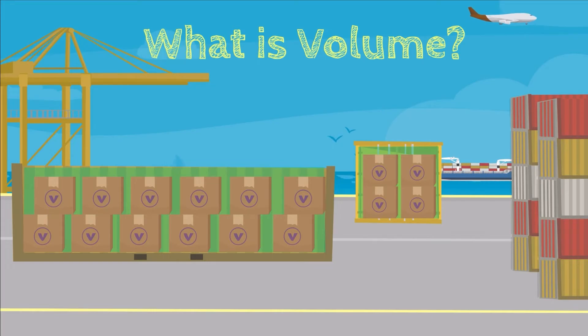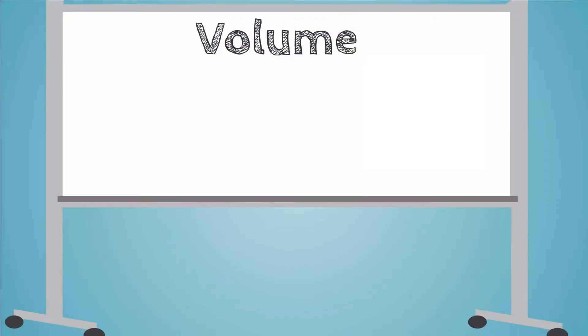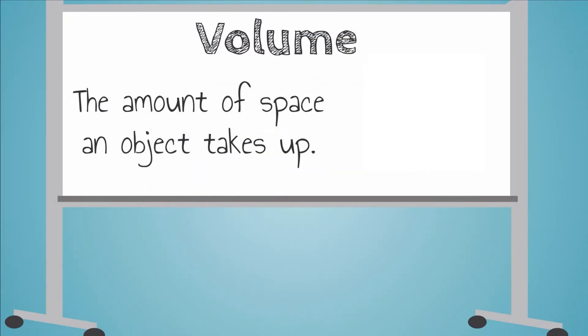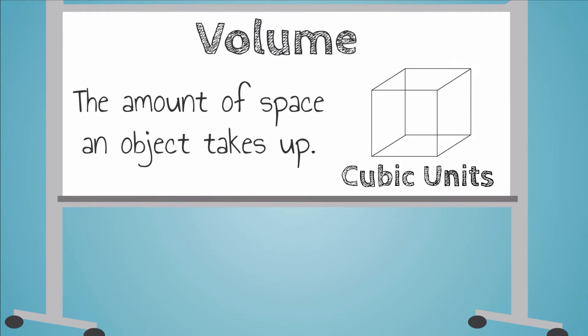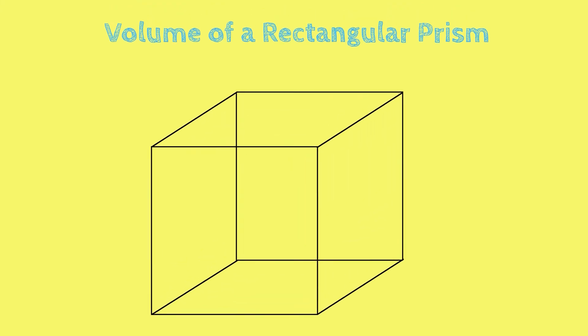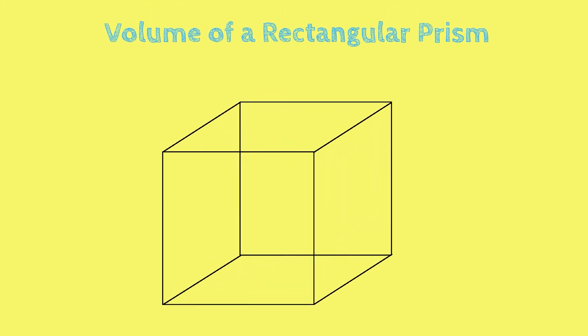So what is volume? Volume can be defined as the amount of space an object takes up. Volume is measured in cubic units. When we're trying to find the volume of a rectangular prism, you can think of trying to find how many cubes fit inside.